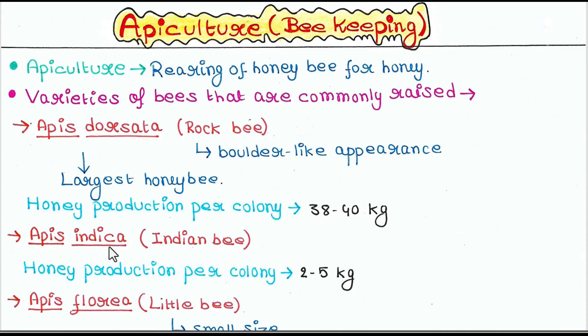Next is Apis indica. They are also known as Indian bee. Honey production per colony is 2 to 5 kg.